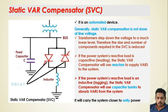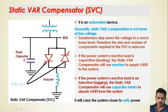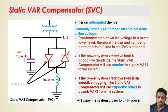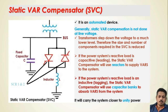When the power system reactive load is capacitive or leading, the static VAR compensator will use a reactor to supply VAR to the system through this inductor, which I am highlighting with my arrow. If the power system reactive load is inductive or lagging, we use the static VAR compensator's capacitor bank to absorb VAR from the system.